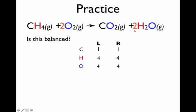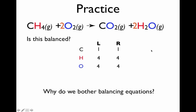Now as this equation is written, we start with one carbon and end with one carbon. We start with four hydrogens and end with four hydrogens. We start with four oxygens and end with four oxygens. With the number 2 in front of the water and the number 2 in front of the oxygen gas, this is the balanced and more accurate description of the chemical equation. This equation is saying: if I have one CH4 and mix it with two O2s, I can make one CO2 and two H2O molecules. That's a more accurate description of what you need to do than the original unbalanced version.